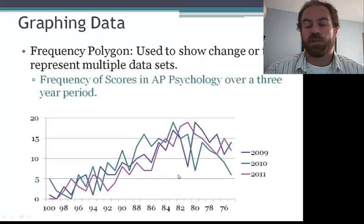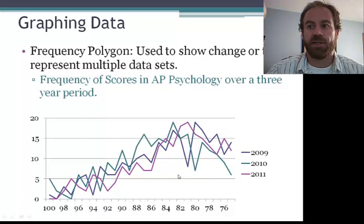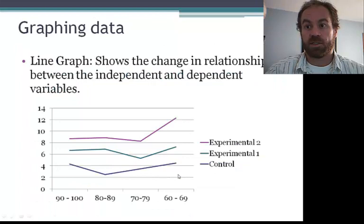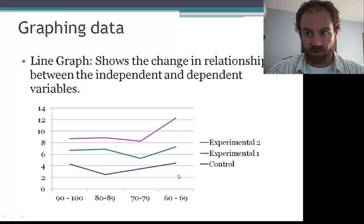A frequency polygon shows change over time or occurrence. So here we can see a comparison of end-of-year grades in AP Psychology over a three-year period. A line graph looks similar to a frequency polygon, but shows the relationship between variables. In this case, the results in various trials for three different groups.